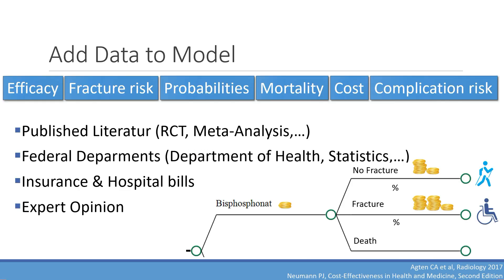Once the model is finished you add all the data: efficacy, fracture risk, probabilities, mortality, cost, quality-adjusted life years, risk of complications, and so on. You find this data from the published literature — ideally randomized controlled trials or meta-analyses. Federal departments such as the Department of Health or statistics agencies can provide population-based data. Insurance claims and hospital bills are important sources for procedure and treatment costs. If you can't find data for a variable, you can ask an expert, or conduct your own study to obtain it.